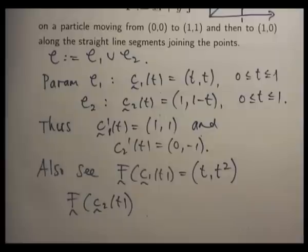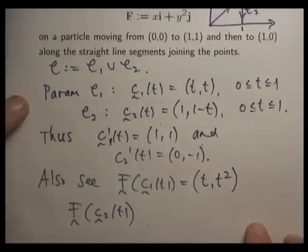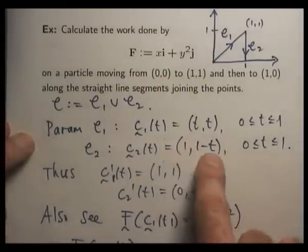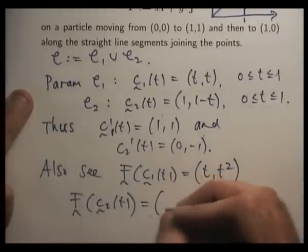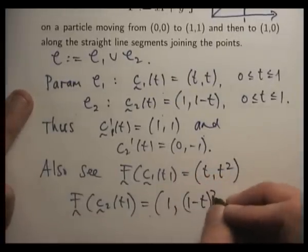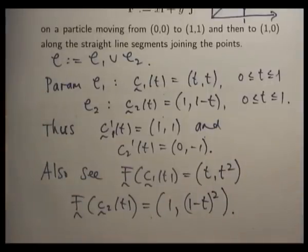And for F along C2, what am I going to get? Well, I'm going to get x equals 1, y equals 1 minus t. So we've got all the parts we need. Now we just take the corresponding dot products.